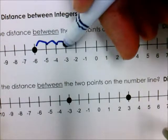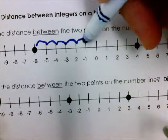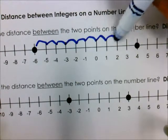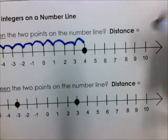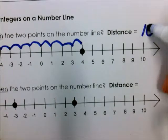So I go 1, 2, 3, 4, 5, 6, 7, 8, 9, 10. All right, well, it took me 10 jumps to get there, so the distance is 10.